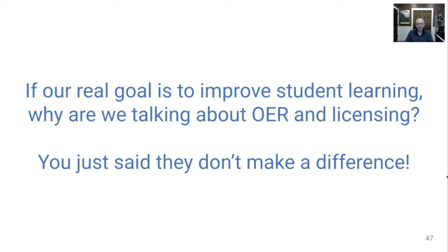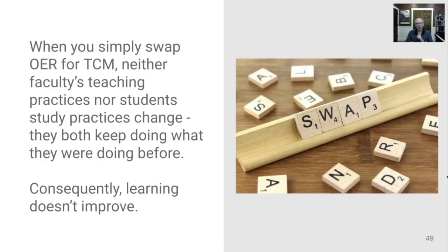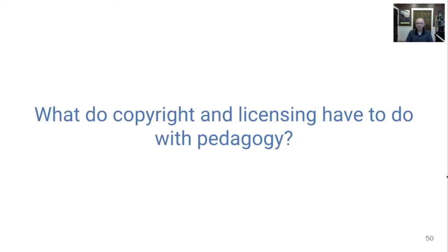So if our real goal is to improve student learning, why are we talking about OER and licensing? Herbert Simon — who won both the Turing Award in computer science and the Nobel Prize for economics — said that learning results from what the student does and thinks, and only from what the student does and thinks. The teacher can advance learning only by influencing what the student does to learn. So when all you do is swap out OER for TCM and neither faculty's teaching practices nor students' study practices change, we shouldn't expect learning to improve. More has to happen than just adopting OER if we want to see learning outcomes get better.